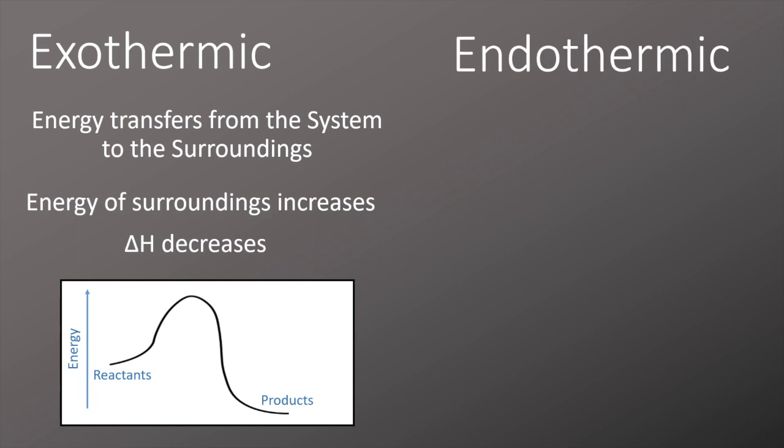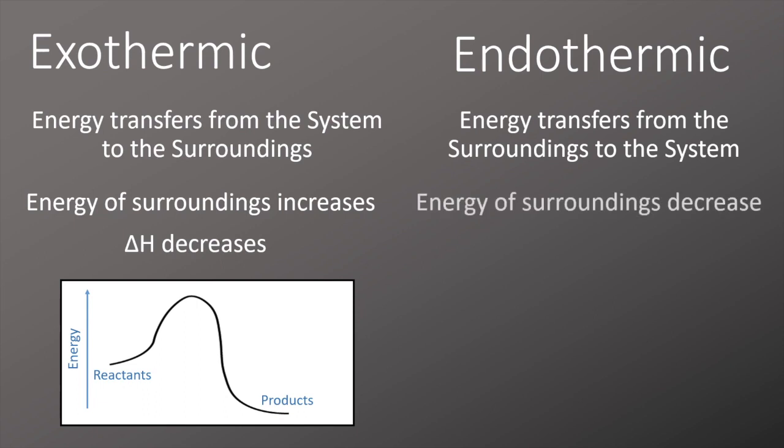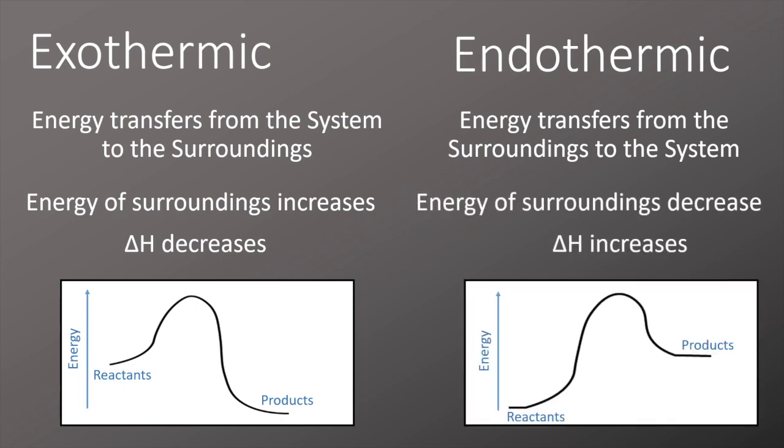With an endothermic chemical reaction, energy is transferred from the surroundings to the system, so the opposite way around, which means the surroundings decrease in energy and we have an increase in delta H. We can see the energy profile here where the reactants start off with a lower amount of energy and finish with a higher amount of energy in their products.